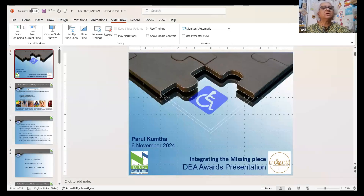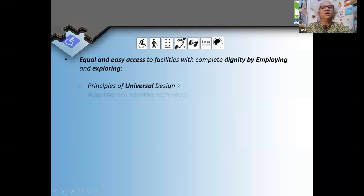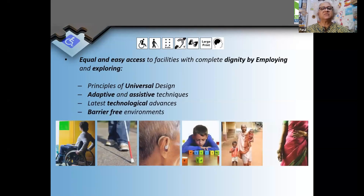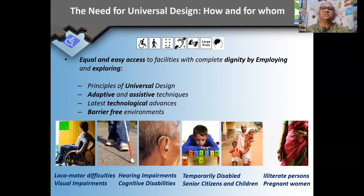I will now start sharing my screen and give you a small glimpse of some of my works. As we all know — and many of you have even done the e-course on universal design — when we talk of universal design, we are talking of equal and easy access. But more importantly, it is equal and easy access which gives dignity. What we do at my firm is explore not just the principles of design, but look at adaptive and assistive technologies and barrier-free solutions for various kinds of situations, not necessarily only disability.